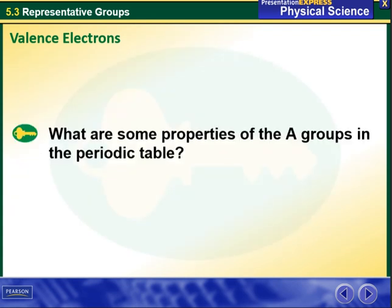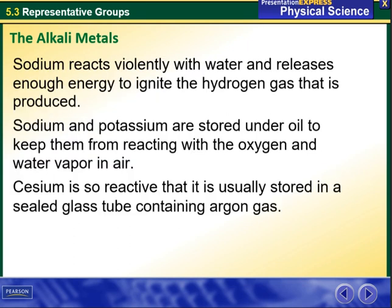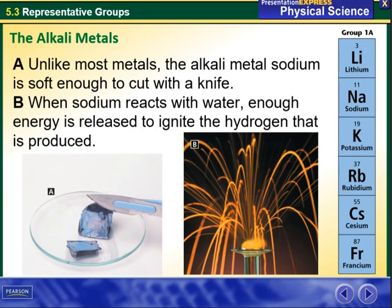What are some properties of the A groups in the periodic table? The elements in group 1A are called the alkali metals. These metals have a single valence electron and are extremely reactive. Because they are so reactive, alkali metals are found in nature only in compounds. The reactivity of alkali metals increases from the top of the group to the bottom.